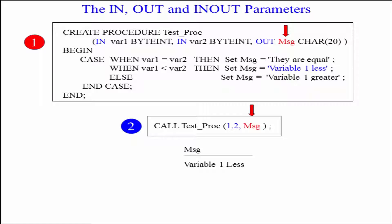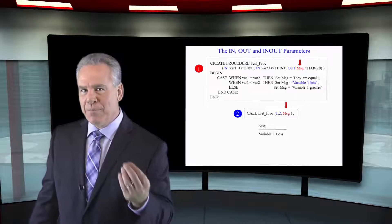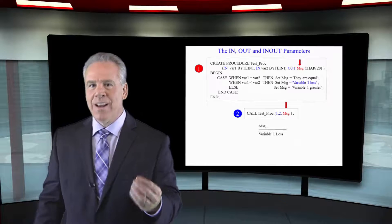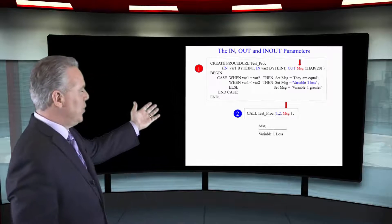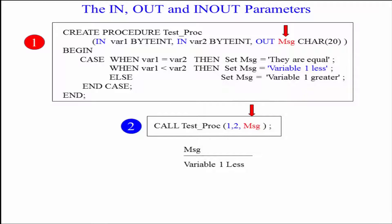That's how I'm going to call this. So this procedure is expecting three input or output parameters. Now look at the actual procedure here. I'm creating the procedure test proc open paren. I've got one input parameter and it's called var one. Then I've got a second input parameter called var two.